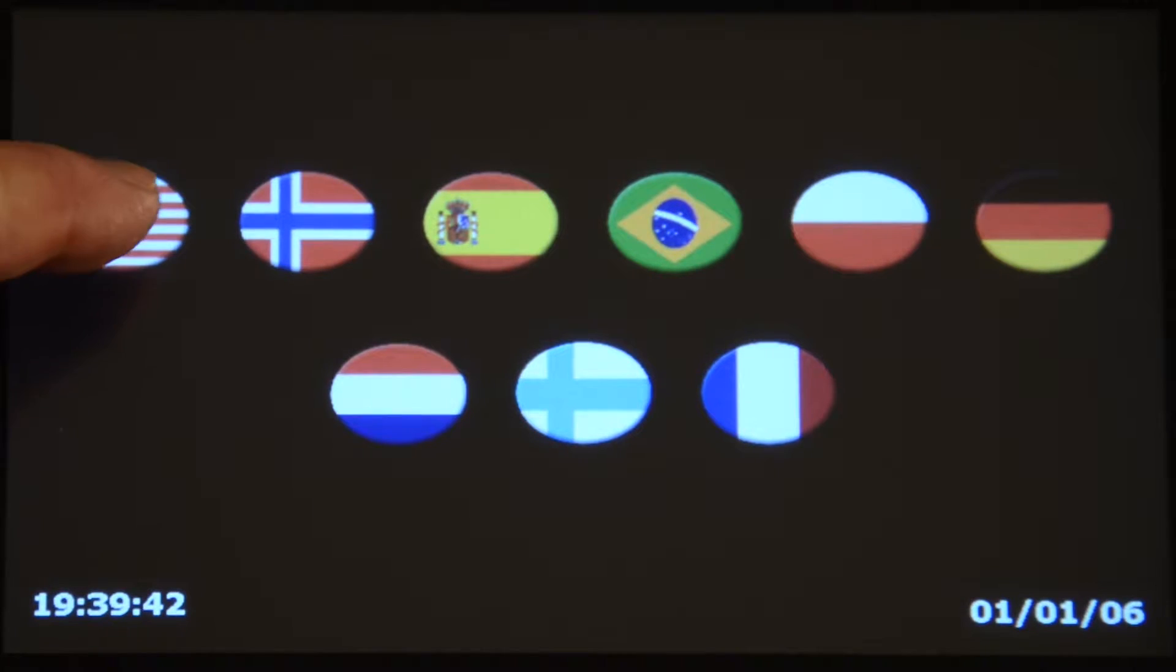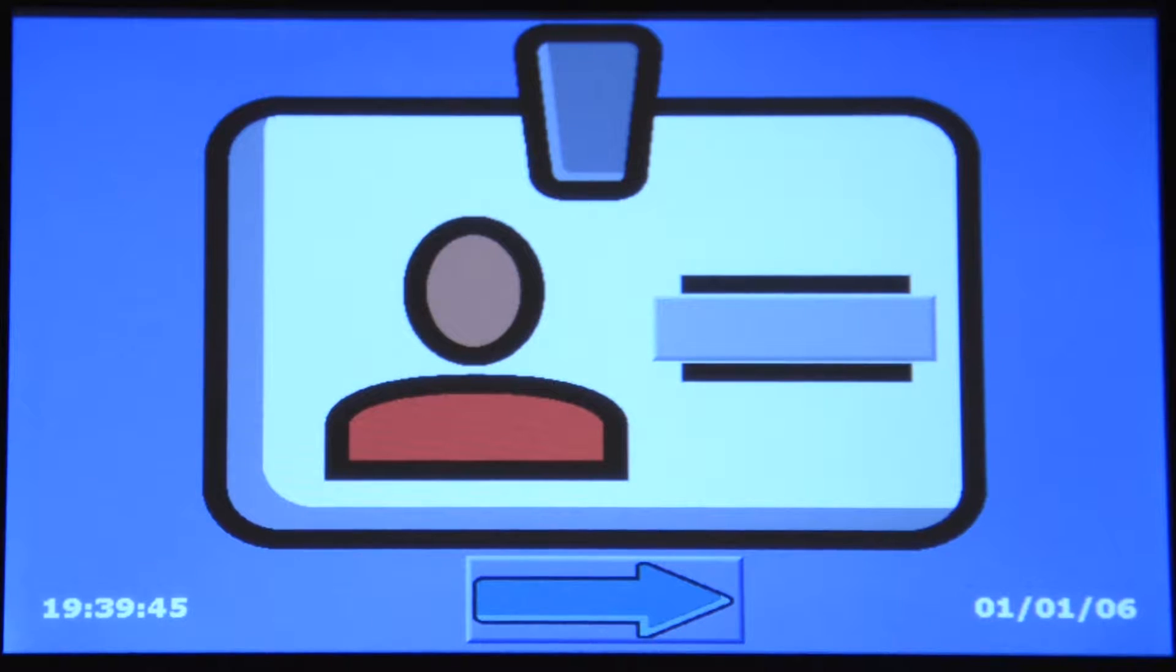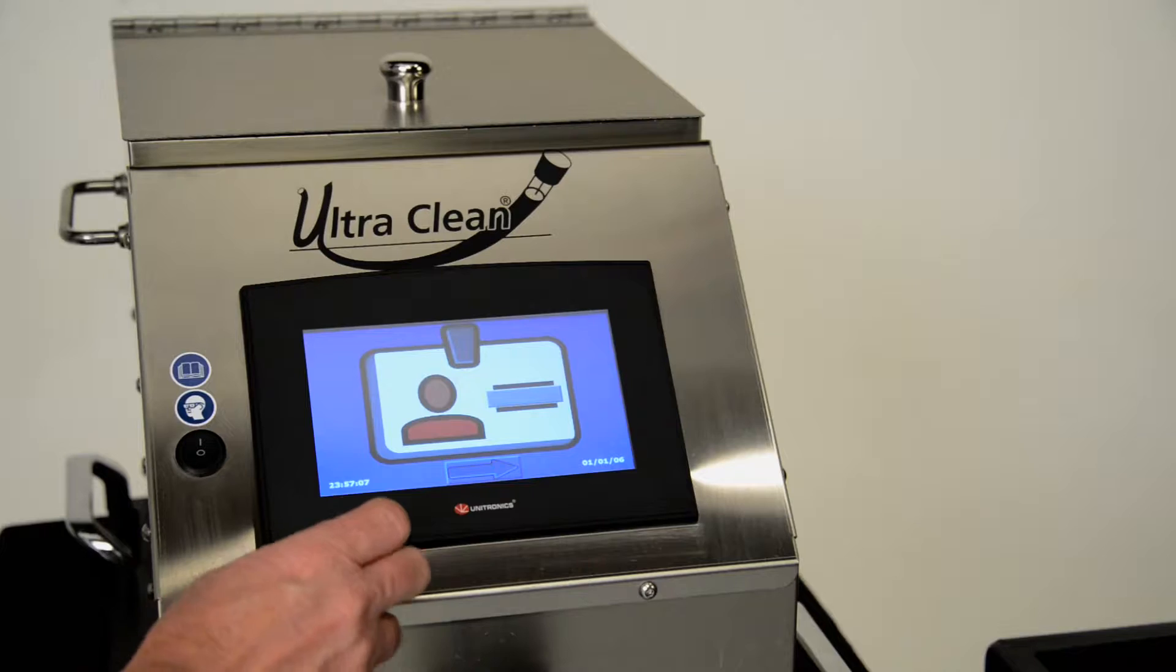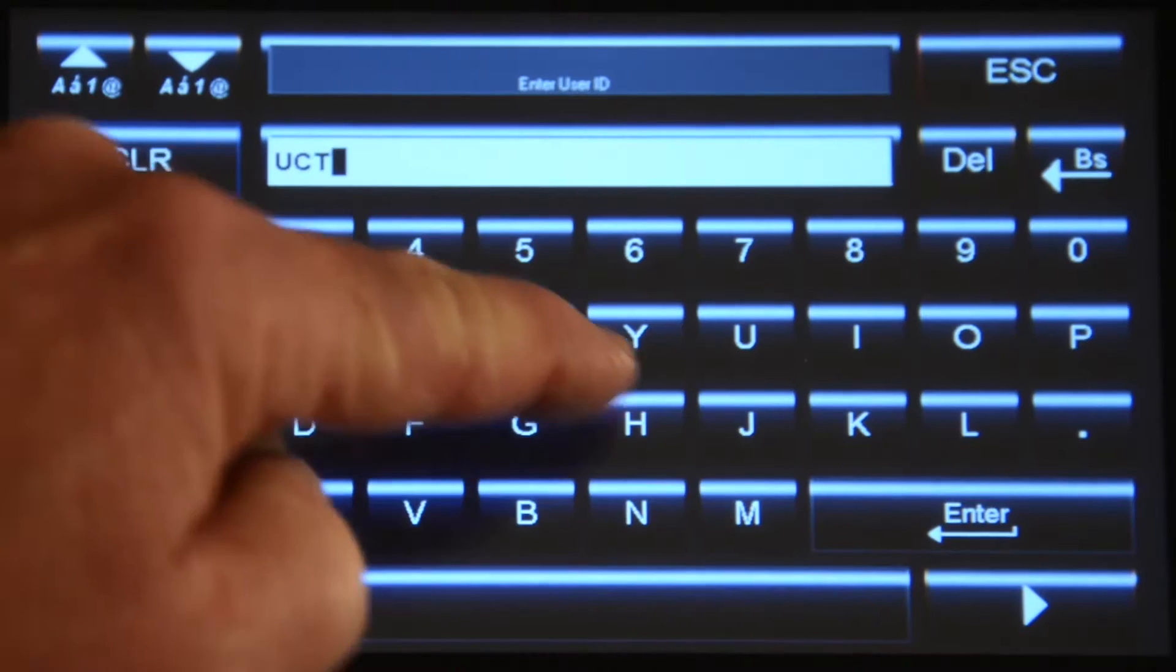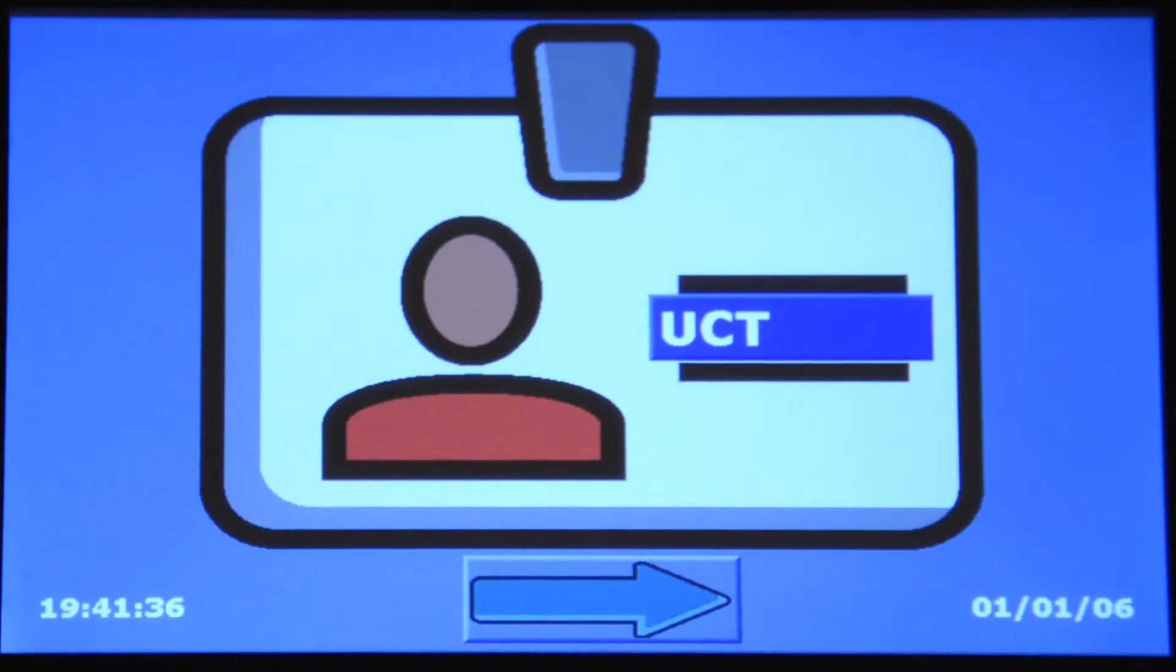Select the flag corresponding to your language of choice. The system will remember your selection. Touch the ID card to enter your name or user ID and press Enter. Then press the forward arrow to continue.